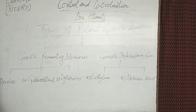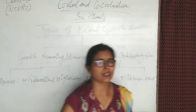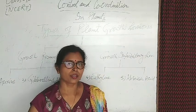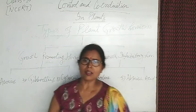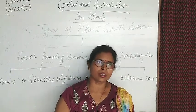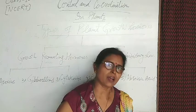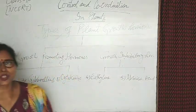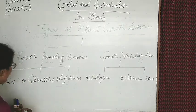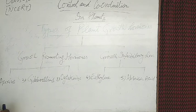Auxins are naturally synthesized inside the plant body. They were first traced by Darwin in oat coleoptile. The coleoptile consists of coleorhiza and coleoptile, found only in monocot plants. The anterior part of the coleoptile of oat is synthesized and responsible for the growth of the plumule and radicle. It is naturally synthesized in the apex region of the root, leaf, and shoot.